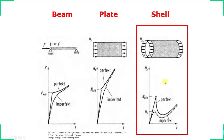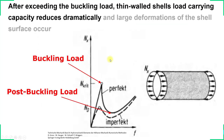The difference between plates, beams and shells is that we have different load displacement curves. If we exceed a certain point — the critical load — beams and plates can still carry some load but with reduced stiffness. In comparison, shells don't carry any load after this point and basically lose a large amount of their load carrying capacity. We call this point the buckling load, and the minimum point after buckling has occurred is called the post-buckling load.